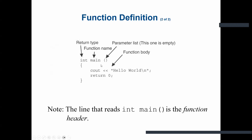Here is an example using the main function. The int is the return type, the function name is main, and the parameter list is the open and close parentheses — in this case, empty. This part is sometimes called the function heading. The body of the function follows, and this function prints hello world to the screen.